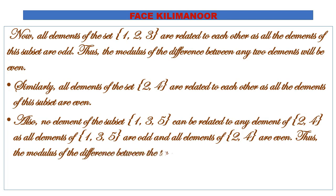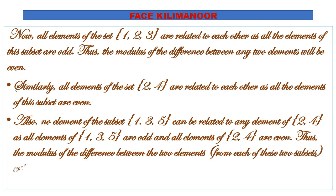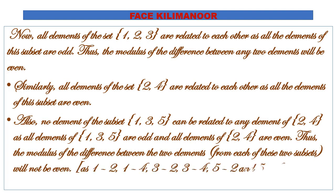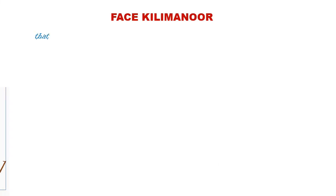The modulus of the difference between elements from each of the two subsets {1,3,5} and {2,4} will not be even, since the difference of an odd and even number is odd. For example, 1−2, 1−4, 3−2, etc., are all odd.